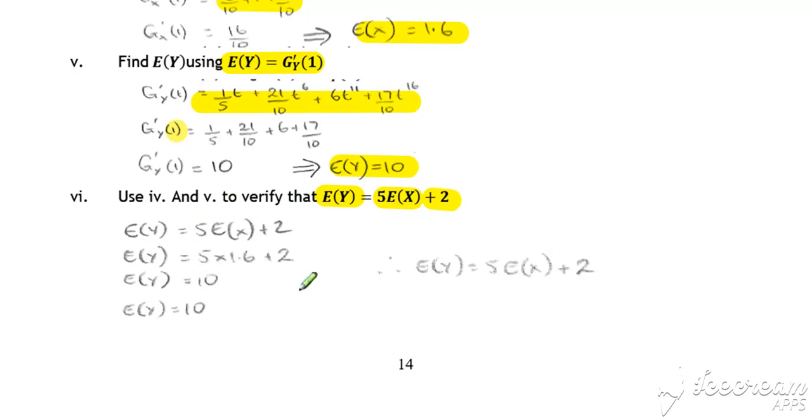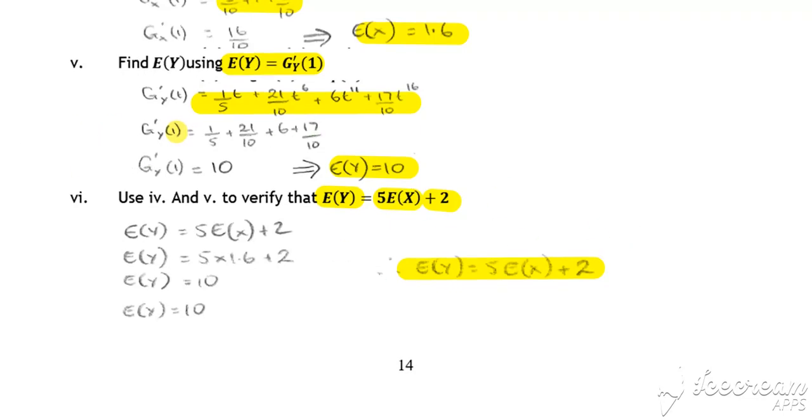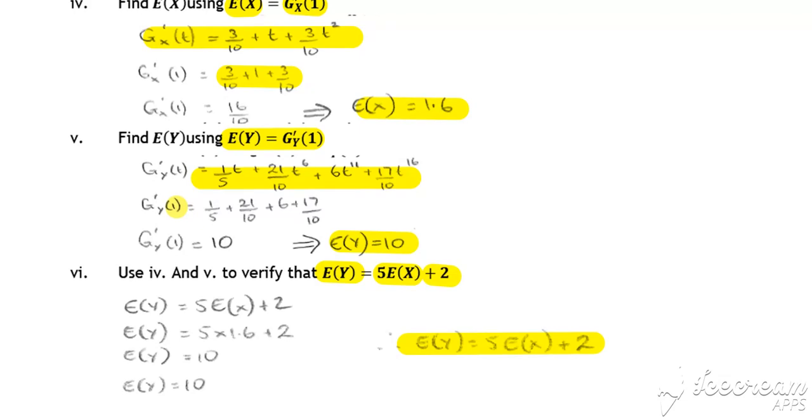Supporting the result from an earlier module when we did discrete random variables and the combinations of them. So that just backs up that earlier result and uses probability generating functions to justify it.